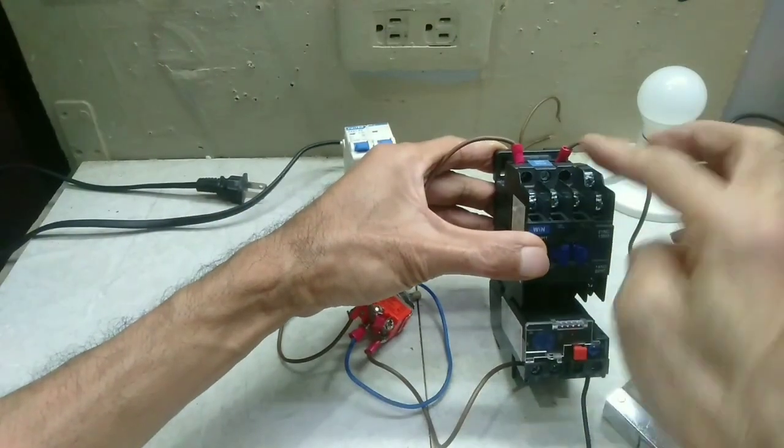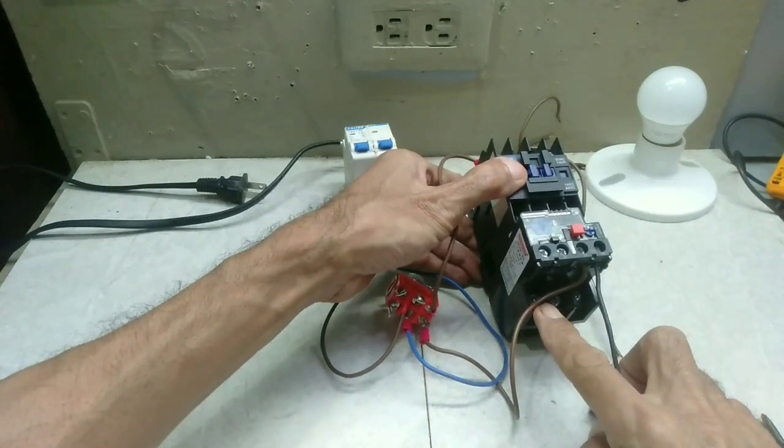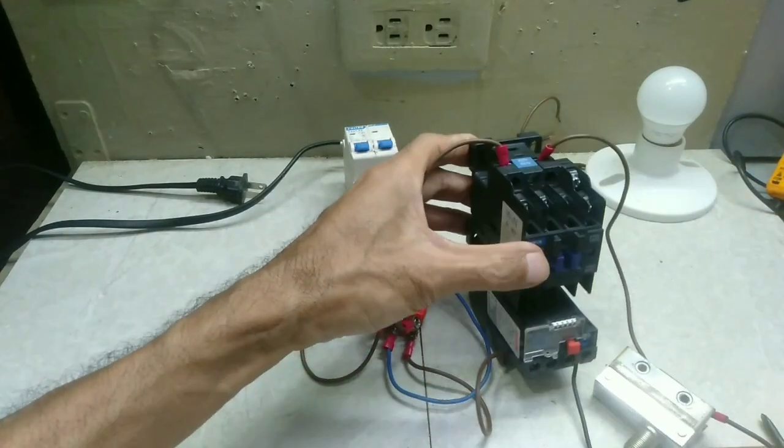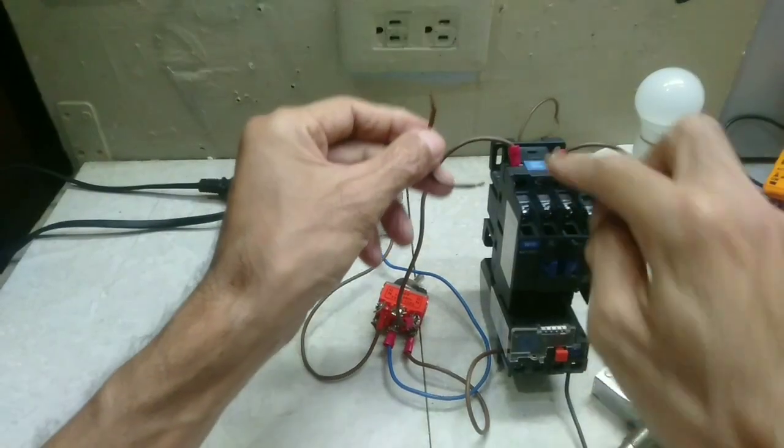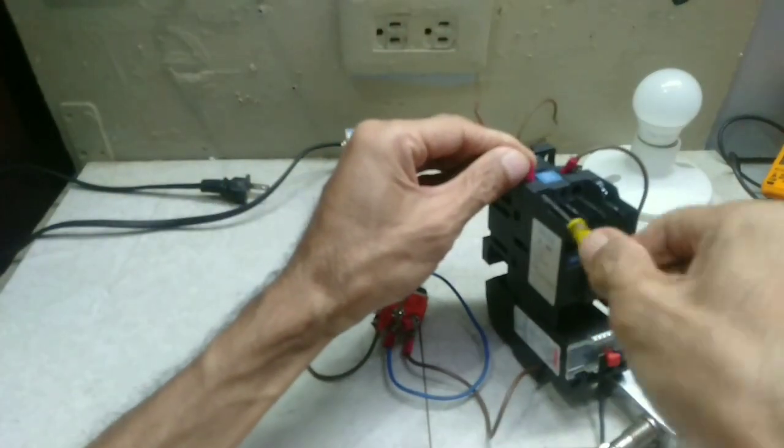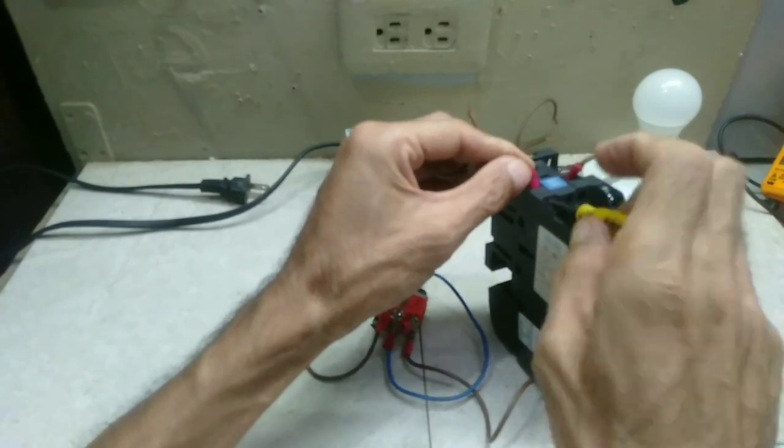Next is the line circuit of the contactor and load. Now for the line circuit of the contactor, make a jumper from A1 to L1 of the contactor.